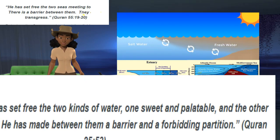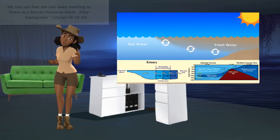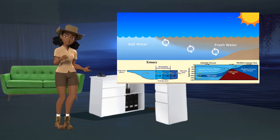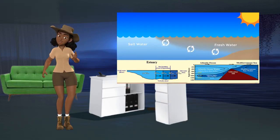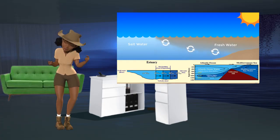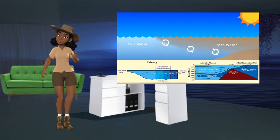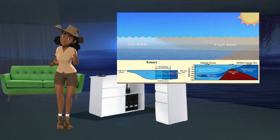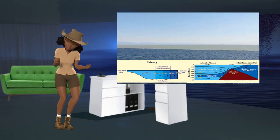One may ask, Why did the Quran mention the partition when speaking about the divider between fresh and salt water, but did not mention it when speaking about the divider between the two seas? Modern science has discovered that in estuaries, where fresh, sweet, and salt water meet, the situation is somewhat different from what is found in places where two seas meet.